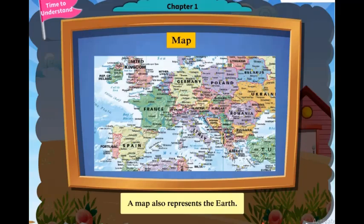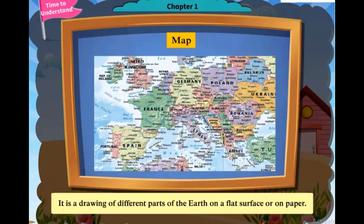A map also represents the Earth. It is a drawing of different parts of the Earth on a flat surface or on paper.